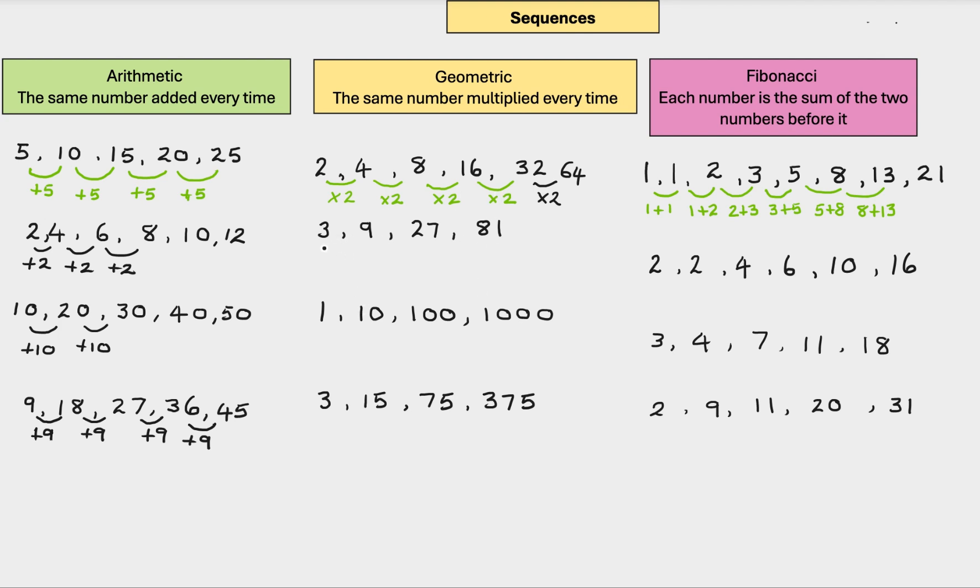Next one, we have 3, 9, 27 and 81. So what are we doing? What have we times 3 by to get 9? We've times it by 3, haven't we? Because 3 times 3 is 9. 3 times 9 is 27. Times 3 again gives you 81. And if you want to be really cocky about it, 81 times 3 is 243.